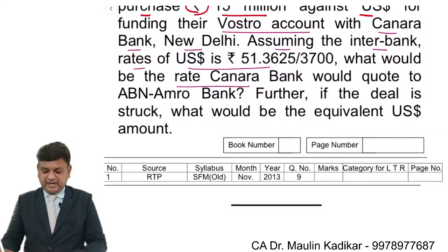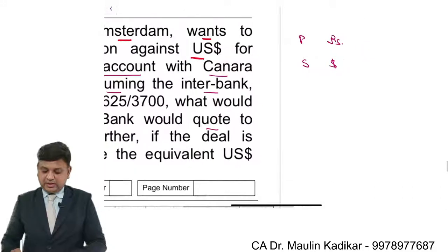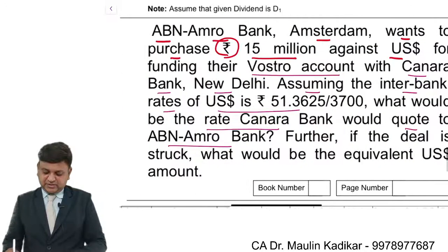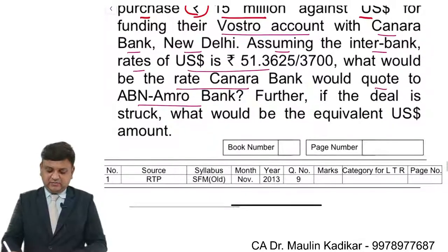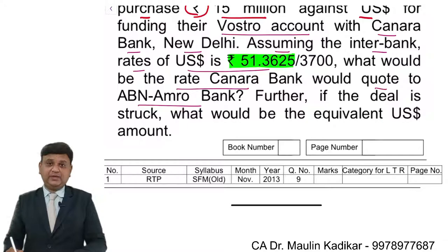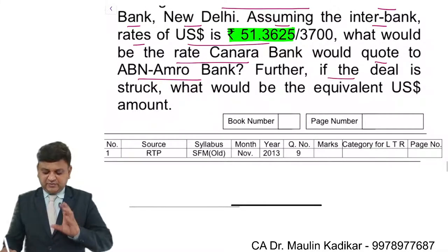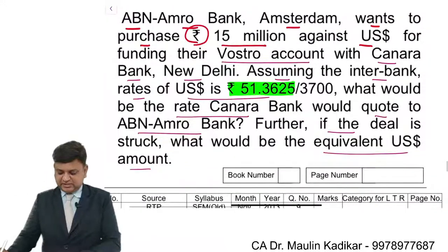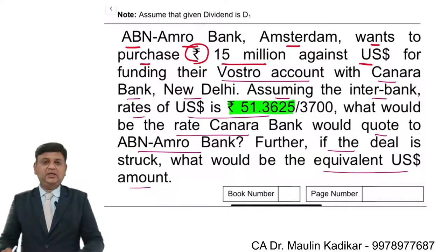The transaction is sell of dollar and purchase of rupees, so for every one dollar you will get less amount of rupees. The rate would be 51.3625. Further, if the deal is struck, what would be the equivalent US dollar amount?